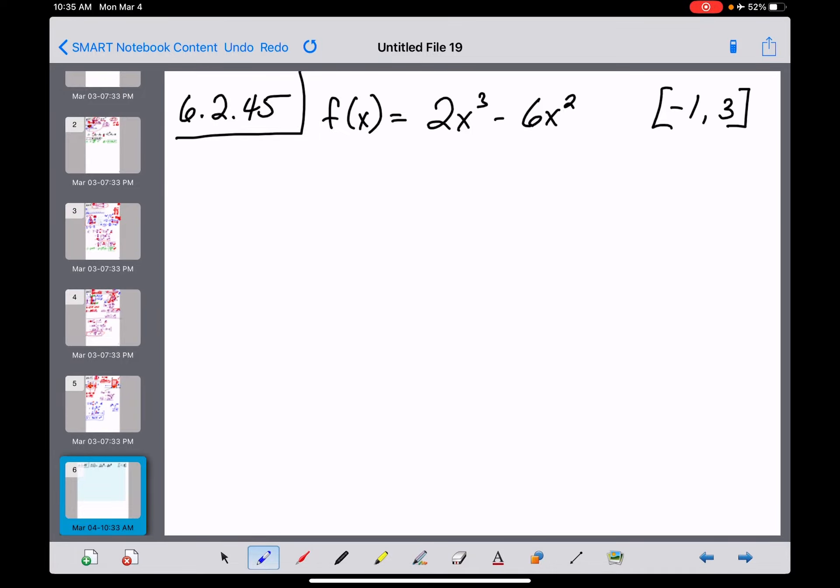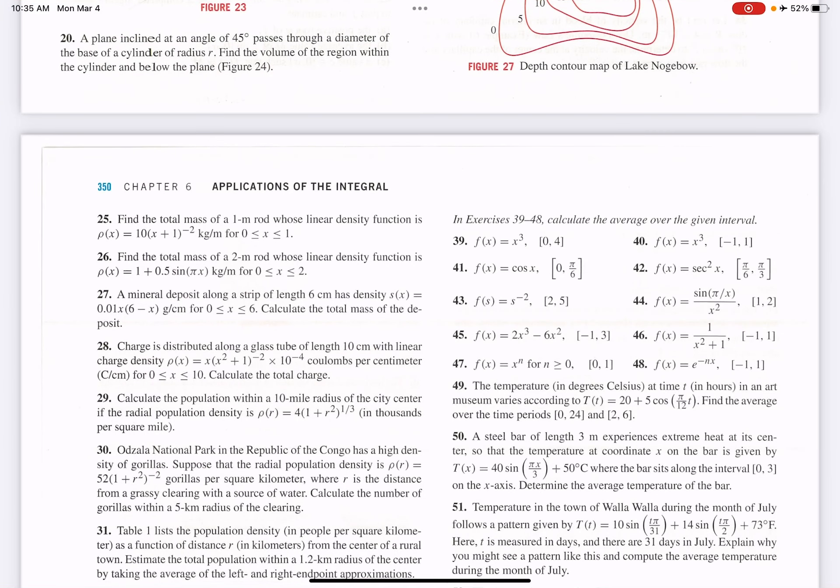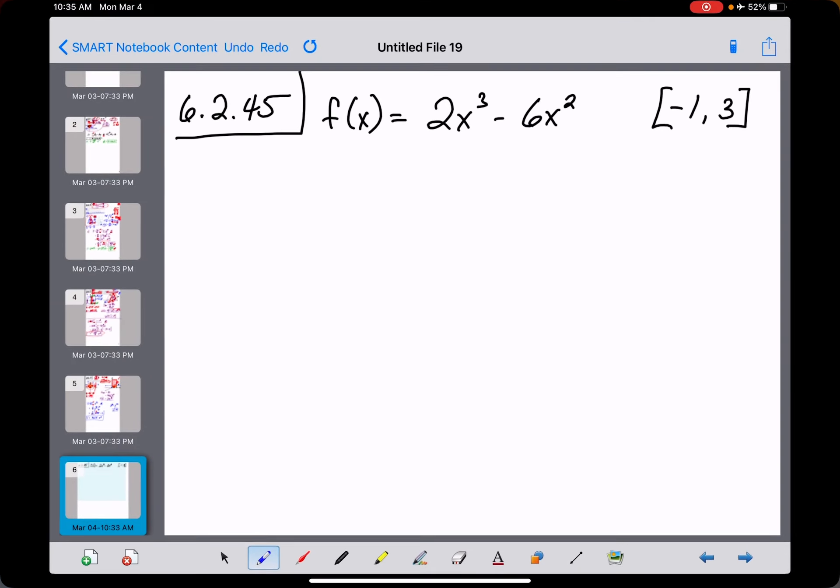Okay, in number 45 the directions ask us to find the average. Actually they worded that in kind of a funny way right here. It says calculate the average over the given interval. Usually they would include the word value. This is an average value problem guys, and we learned this formula at the very end of our notes in 6.2.